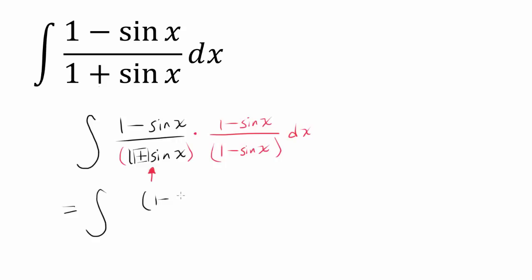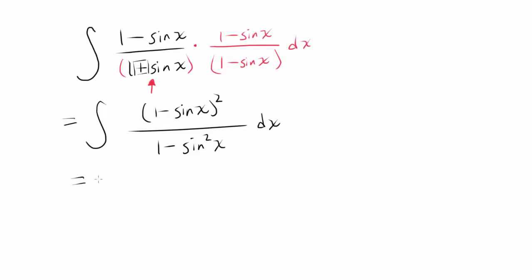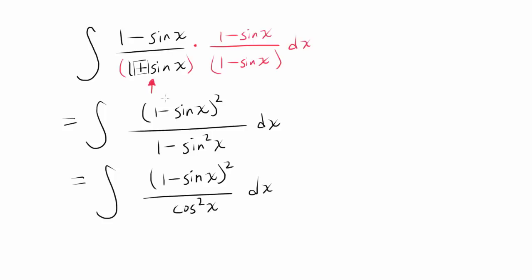Because you are going to have (1 minus sine of x) squared up top, and down below you are going to have (1 minus sine squared of x), which is equal to cosine squared of x. So that helps us reduce the bottom of this fraction to a single element, cosine squared of x dx.